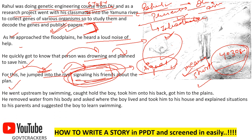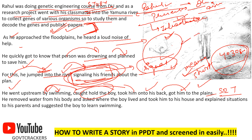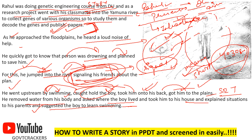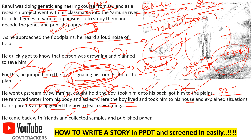'He went upstream by swimming, caught the boy, took him on his back, and got him to the plains.' Three actions — like an SRT situation. He went upstream because the river flow is in the opposite direction of where the boy is drowning. After that, 'he removed water from his body, asked the boy where he lived, dropped him to his house, and told his parents the situation. He also suggested the boy learn swimming so there will not be a future problem.' This shows responsibility — going to his home, talking to parents, and giving advice.